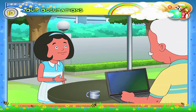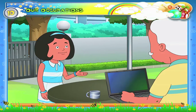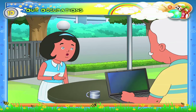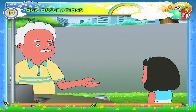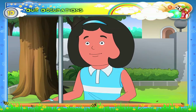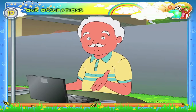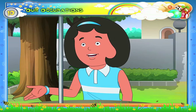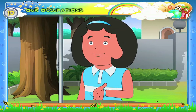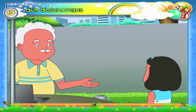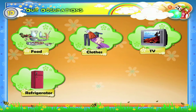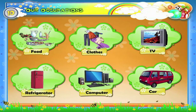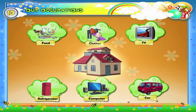Dadaji, I know. Dad works as an engineer in a company. What were you doing when you were young? I was the postmaster in a post office. Really? What was your dad doing? He was a farmer. Why do people work? People work to earn money because everyone needs money to buy food, clothes, TV, refrigerator, computer, car and so many other things we use at home or we need.